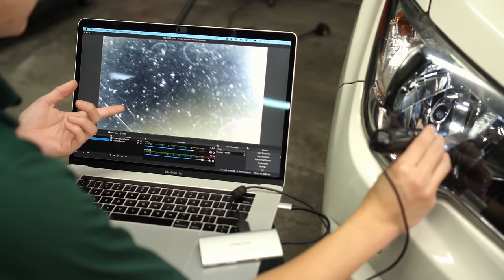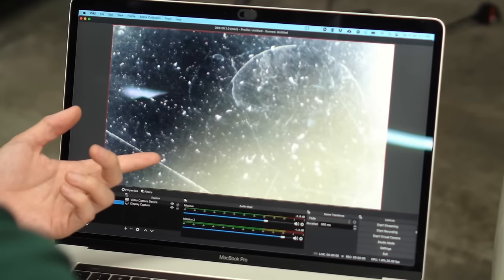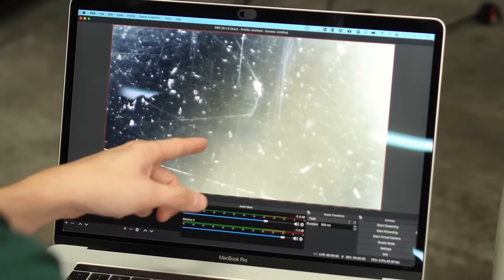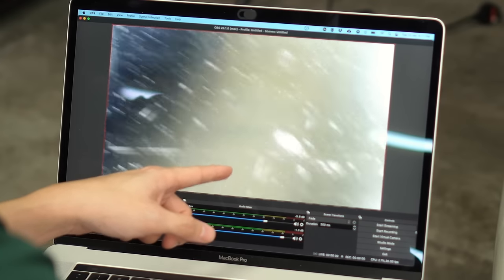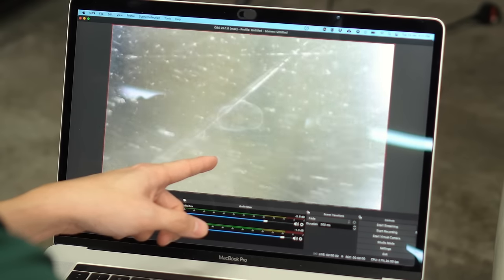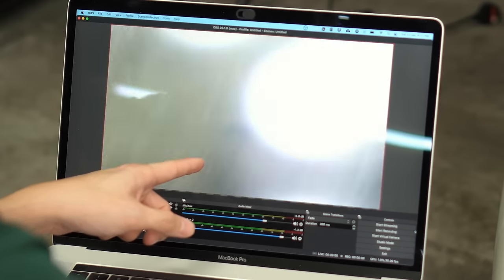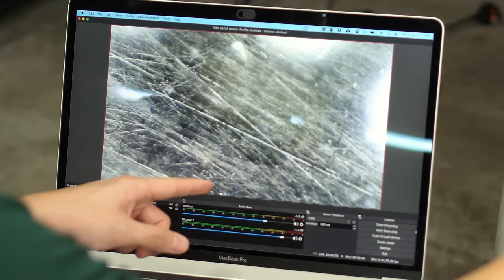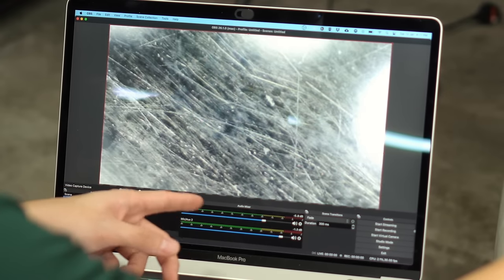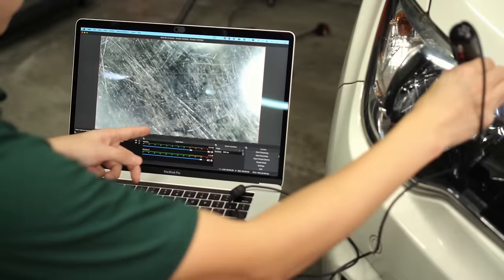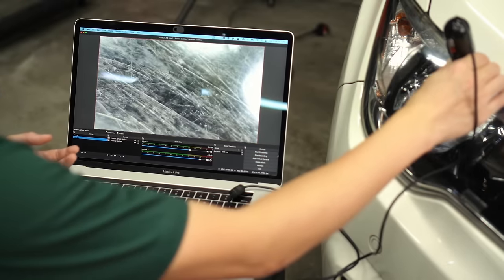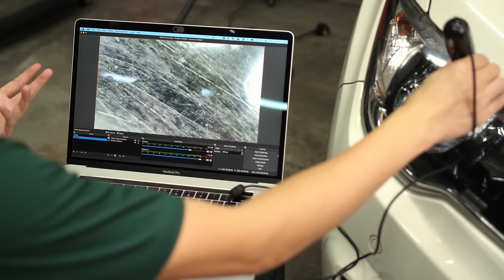If I move the microscope down to where the clear coat is healthier, there's much less scratches. Although you still have plenty of stone chips, this car is about three years old, but it's definitely not as much as the one where the clear coat is gone. That's the difference between healthy clear coat and oxidized failed clear coat on headlights.